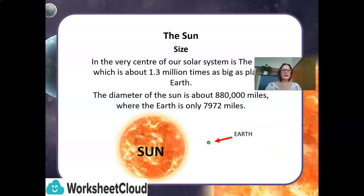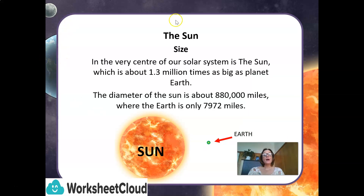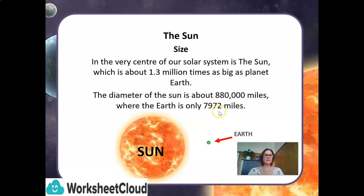Let's take a look at the size of the Sun. In the very center of our solar system is the Sun, which is about 1.3 million times as big as planet Earth. That's huge. The diameter of the Sun is about 880,000 miles, where the Earth is only 7,972 miles. Look at the difference in the size of the Sun versus our Earth.